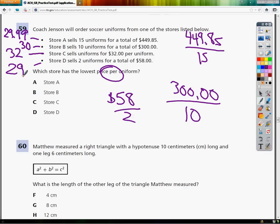So if I'm looking for the lowest price, I pick the smallest number, which is just 29.